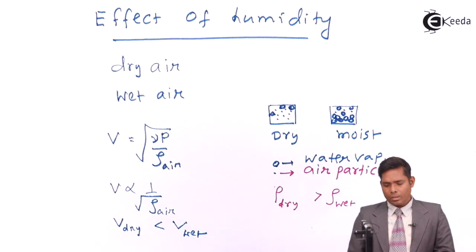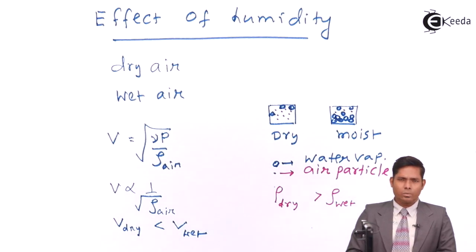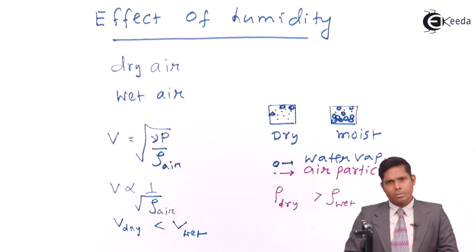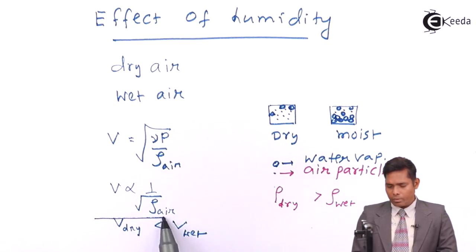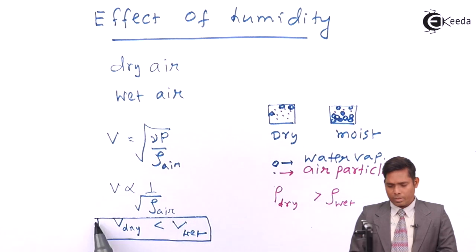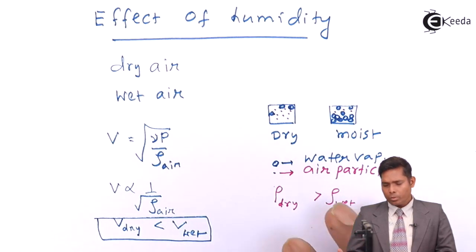So during rainy season, the sound travels faster than during summer season. That is the conclusion you can derive from this. This is how humidity affects speed of sound. More humid means more moisture. The speed will increase, and otherwise it will be less. Thank you.